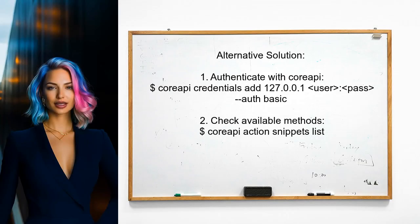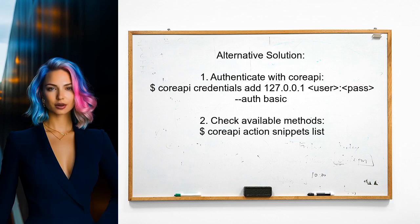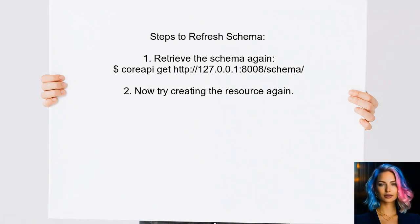Another user faced a similar issue after authenticating with CoreAPI. They found that the REST unsafe methods were listed after running a specific command to add credentials. They suggest checking the methods using the command for snippets. They encountered an error when trying to create a resource, which indicated that the create key was not found. The solution was to refresh the schema by retrieving it again after authentication, allowing them to create the resource successfully.